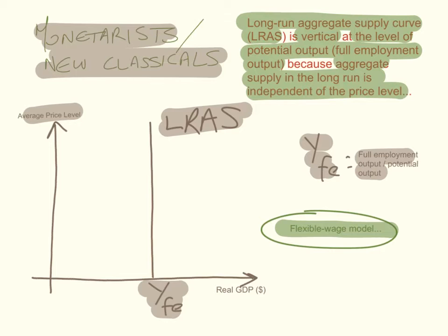These economists don't necessarily disagree on the shape of the short-run aggregate supply curve — the short-run aggregate supply curve in this model is a regular upward-sloping supply curve. It's the long-run aggregate supply curve that they believe is a vertical, inelastic curve independent of the price level, because wages and prices are flexible in the long run and should adjust automatically to bring the economy to its full employment level of output.